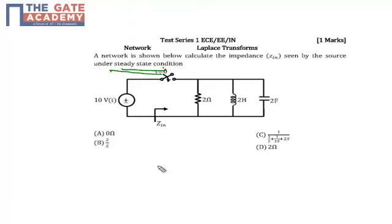Circuit is in steady state. Circuit shows that at t equals 0 the switch is going to close. But question warns that we need to calculate the input impedance under steady state. First of all we need to draw the circuit in steady state.